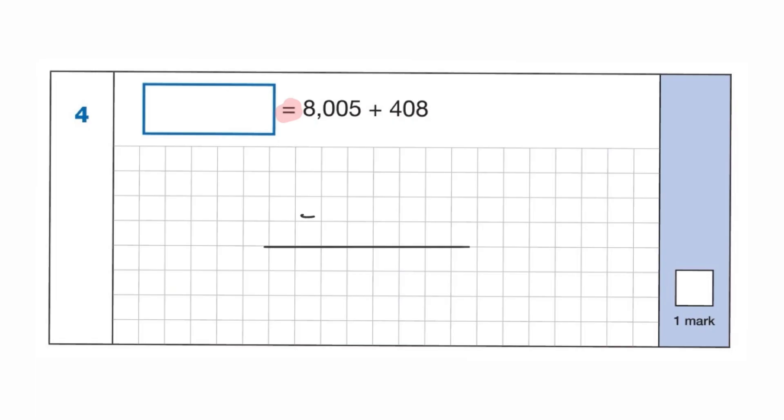8,005 add 408. 5 add 8 is 13. So we're going to carry the 1. 0 add 0 add 1 is 1. So we'll write that in. 0 add 4 is 4. And the 8 drops. Fairly simple.